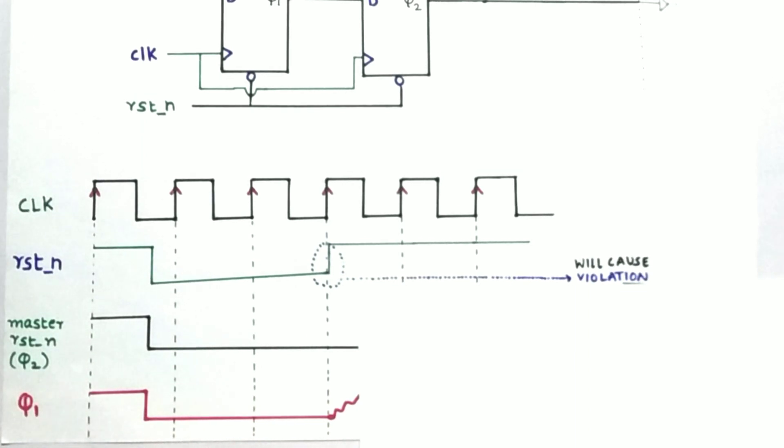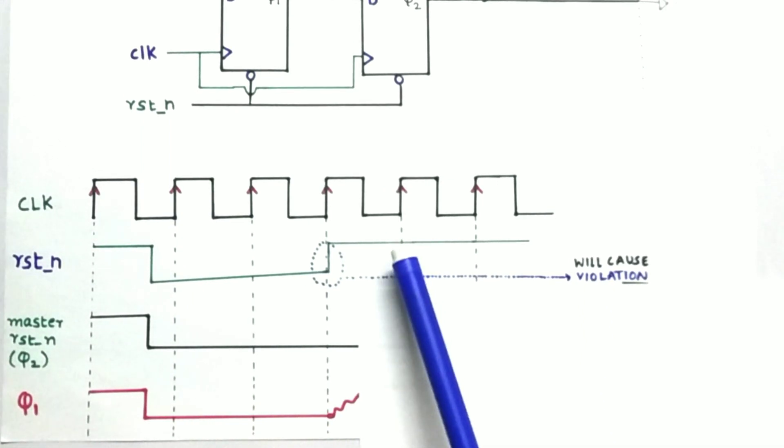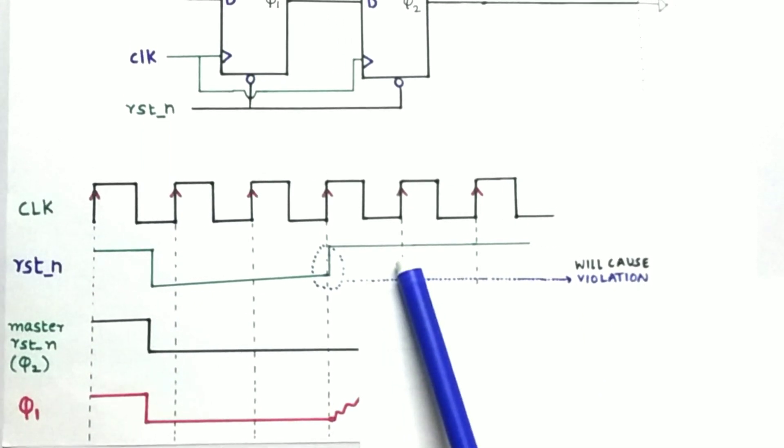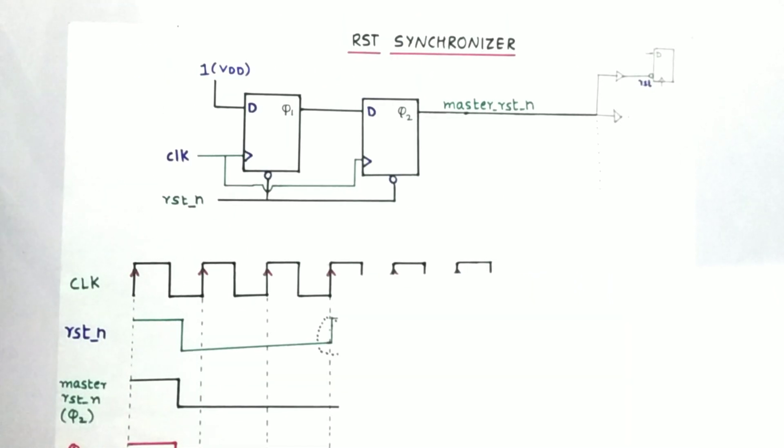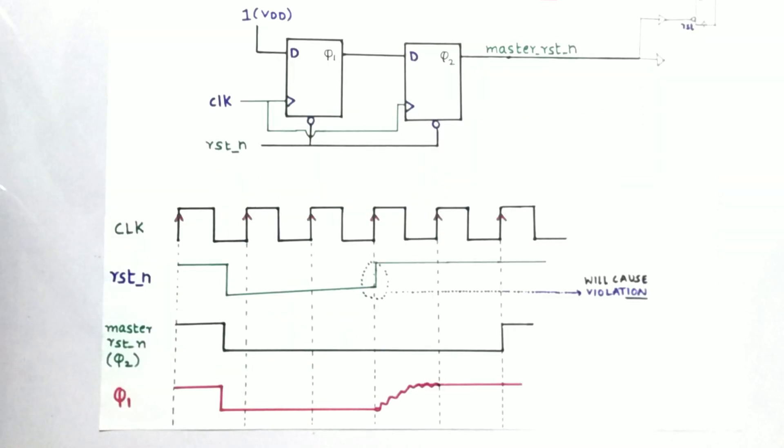So after the violation at the next edge, you can see the reset is back to normal. So now the flop one will consider the input. We had made the input 1, so now 1 will go to Q1, and at the next cycle the Q2 will see the 1. So this is how our waveform will look.